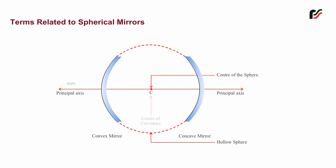c. Center of curvature. The geometrical center of the hollow sphere C from which the mirror is formed is the center of curvature.